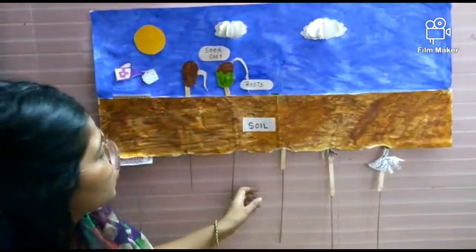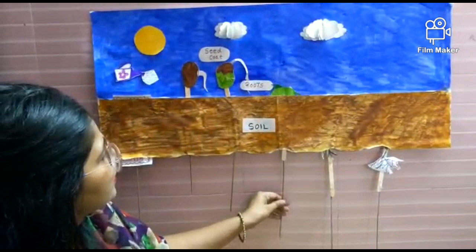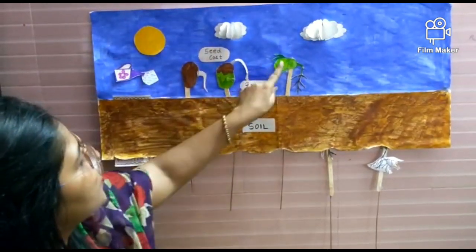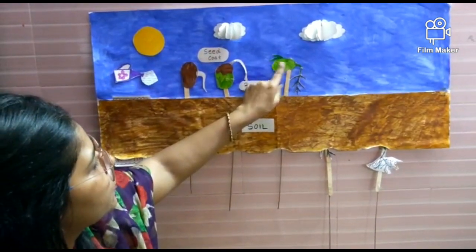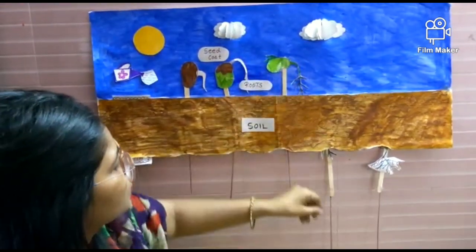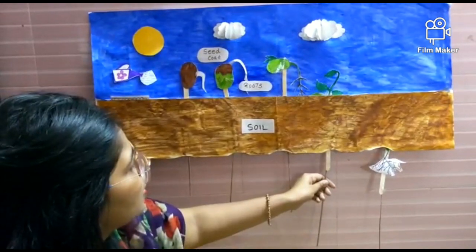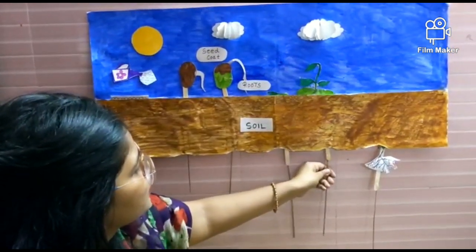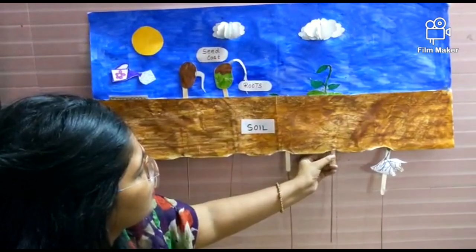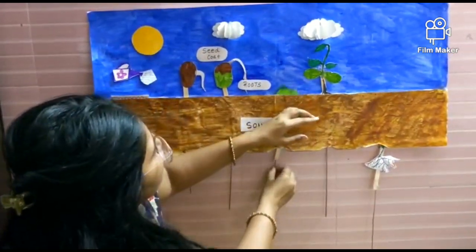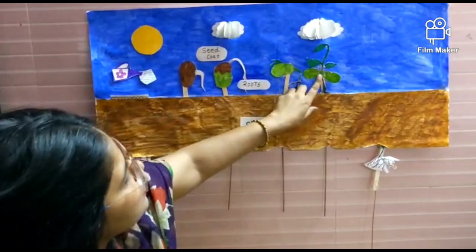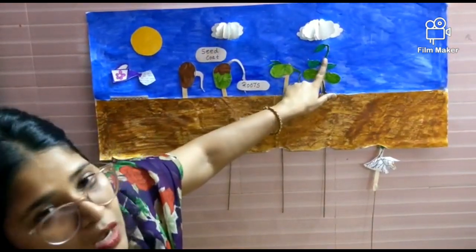After a few more days, inside this cotyledon, the baby plant will come out. These are the new leaves which are getting developed from this cotyledon. After a few more days, from this cotyledon, the new plant has come out.